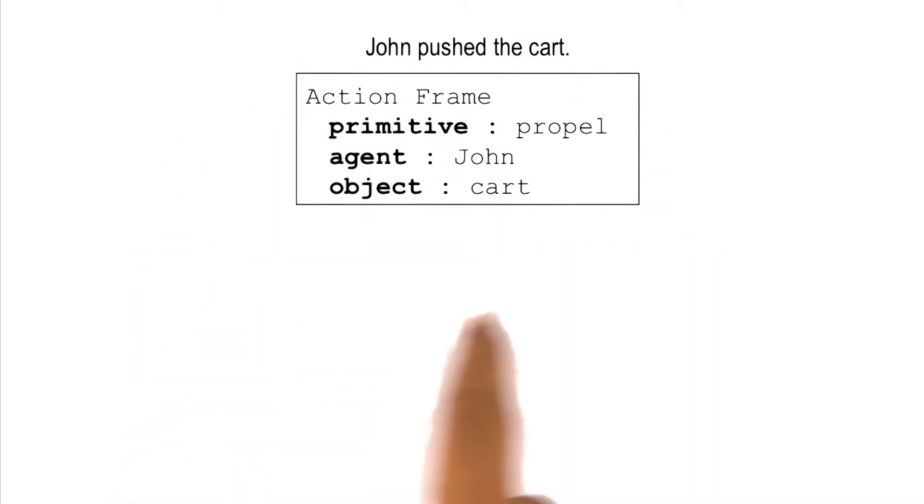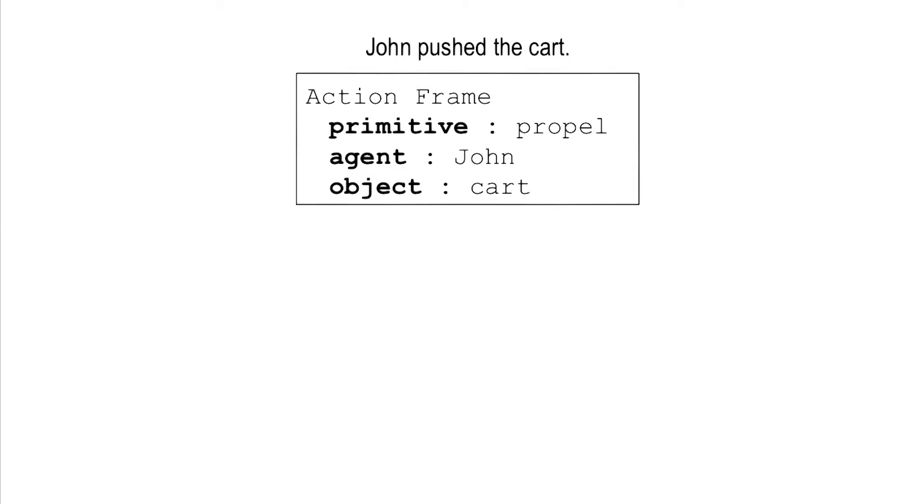But by now, we have this molecular forms of knowledge representation in which a large number of atoms are getting connected with each other. And those connections are important because once you have that structure of the molecule, it tells you what can go in the place of each atom.